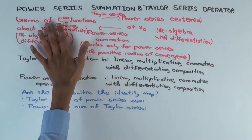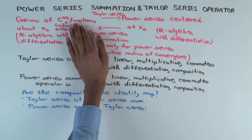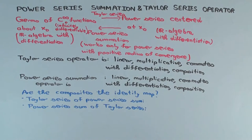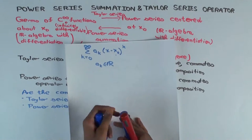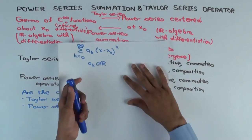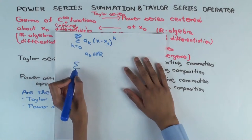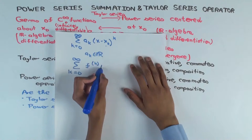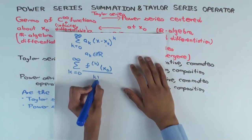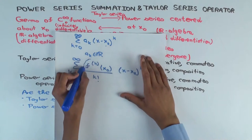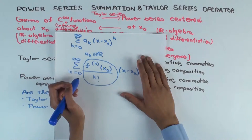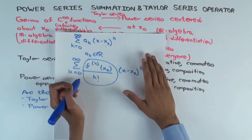We have these two structures with operators going back and forth. Given a germ of a C∞ function about x₀, you can take its Taylor series at x₀ to get a power series centered at x₀. To get the Taylor series of F at x₀: summation from k=0 to infinity of F's k-th derivative at x₀ over k factorial, times (x minus x₀) to the k. The coefficients are the derivatives divided by k factorial, giving you a power series.